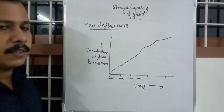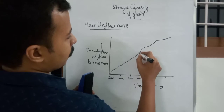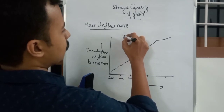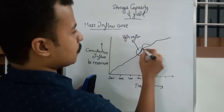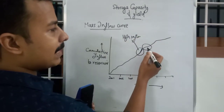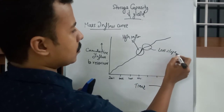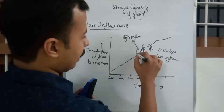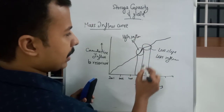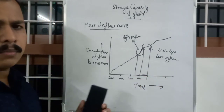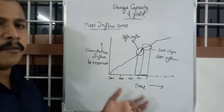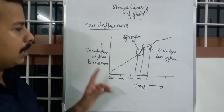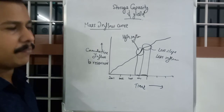In the mass inflow curve, a portion with higher slope indicates higher inflow, and comparatively less slope indicates less inflow in that period. Inflow varies due to factors like precipitation and rainfall seasons. So the mass inflow curve plots cumulative inflow to the reservoir against time.